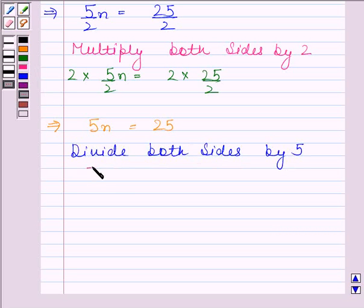We have 5N divided by 5 equals to 25 by 5. This implies N is equal to 5.